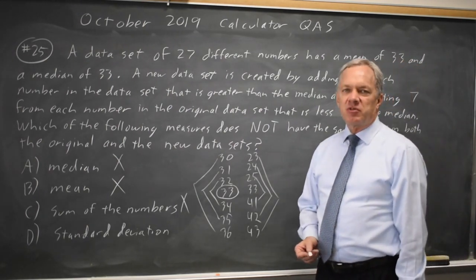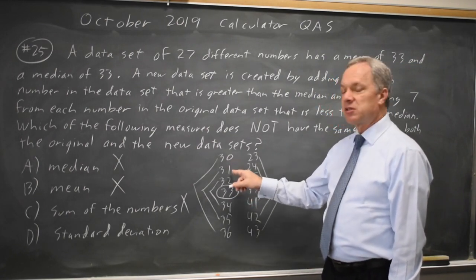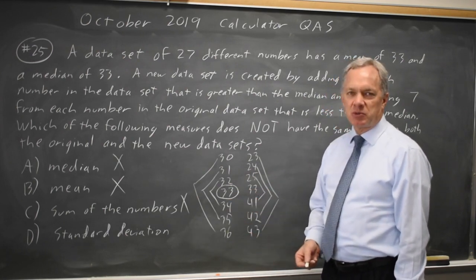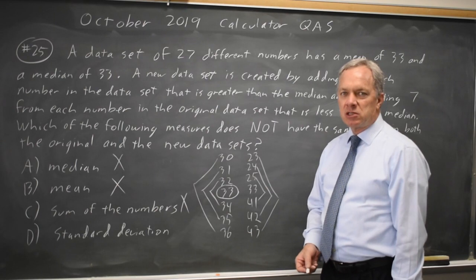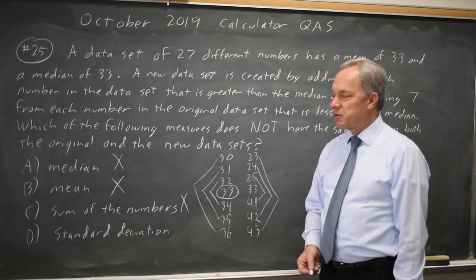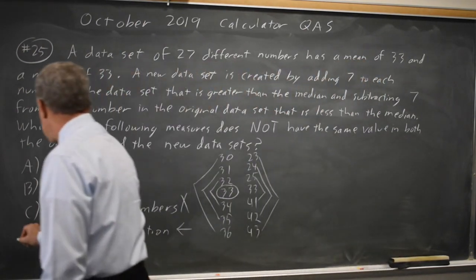Standard deviation is a measure of how spread out the numbers are. When we subtracted 7 from each of the lower numbers, we made them further from the mean. When we added 7 to the higher numbers, we made them farther from the mean. So all numbers but the middle number have become farther from the mean. We've made the standard deviation larger. So choice D would be the correct answer.